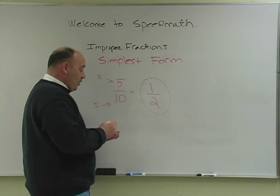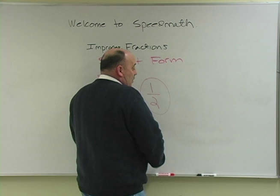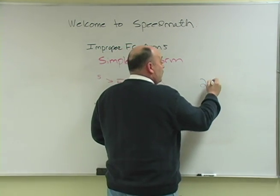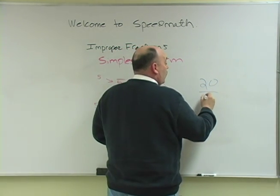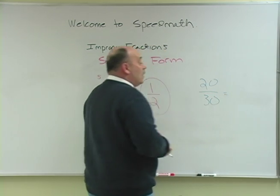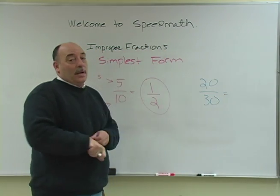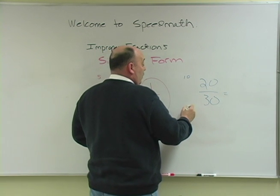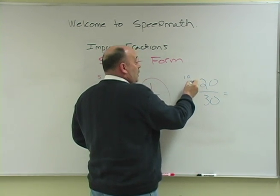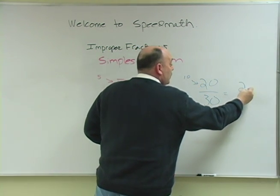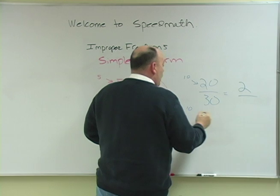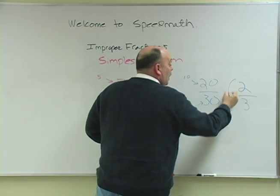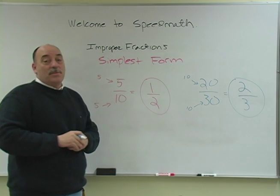Sometimes the numbers are a little bit bigger. Sometimes we'll have a fraction like 20 over 30. We all know that 10 goes into both of these, so I put a little 10 here and a little 10 here. 10 goes into 20 two times, and 10 goes into 30 three times. And I've just reduced this to the simplest form.